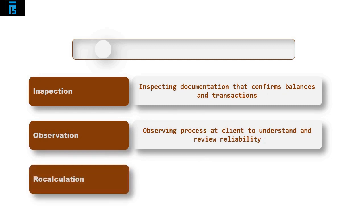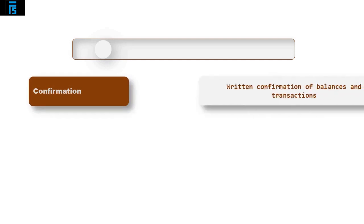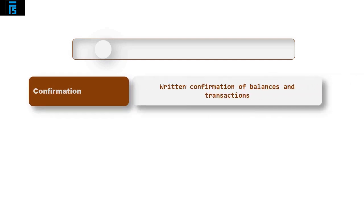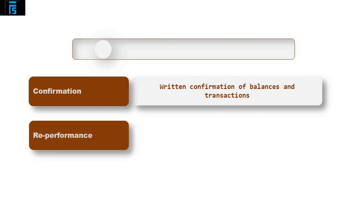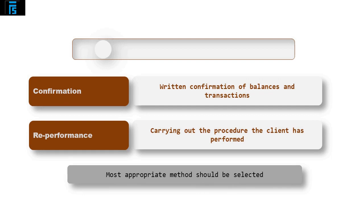Re-calculation — recalculating transactions and balances for accuracy. Confirmation — written confirmation of balances and transactions in the financial statements. And re-performance — the auditor carrying out a procedure the client has performed to see if they did it correctly. Each method can be used to design audit procedures, and the most appropriate method should be selected.